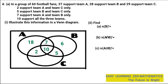Now for set C. We need to find the difference between the sum of the intersection numbers in circle C and 29, which is the total for team C. Adding those numbers gives 17, and 29 minus 17 gives 12. So 12 fans support team C only. This fully illustrates the information in the Venn Diagram.